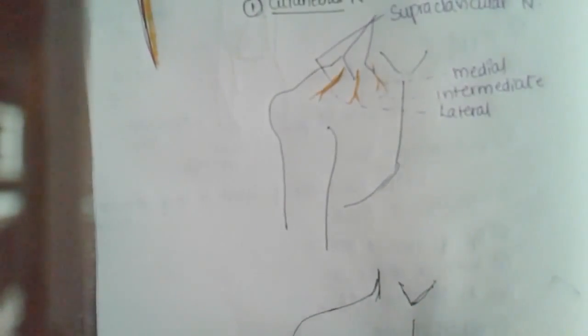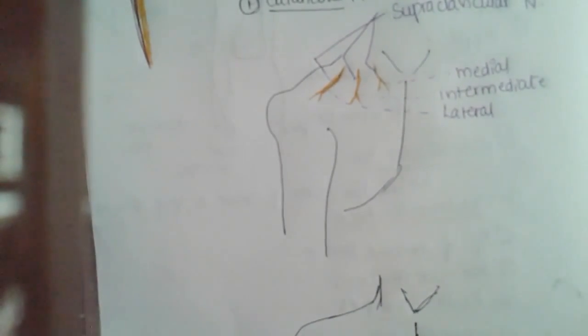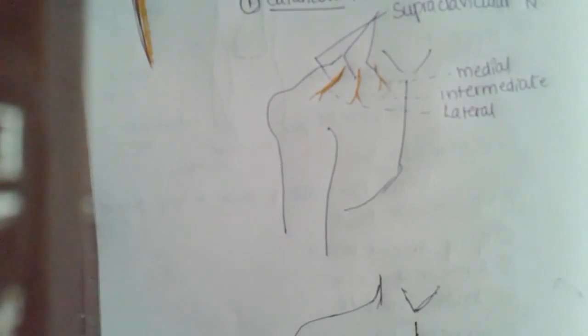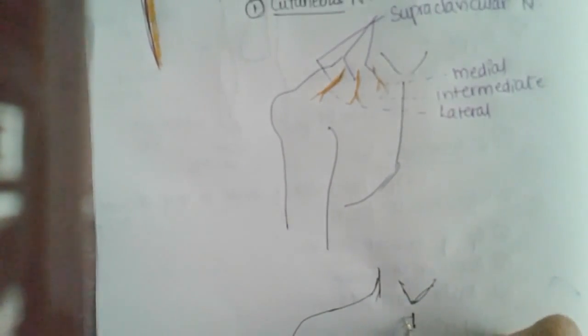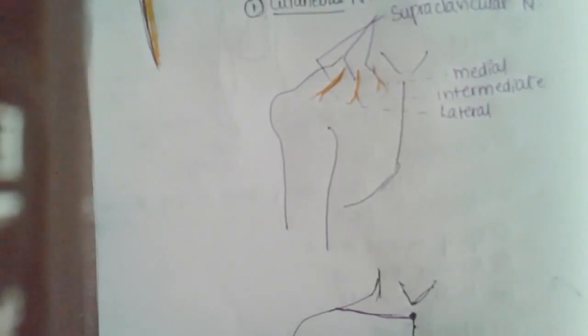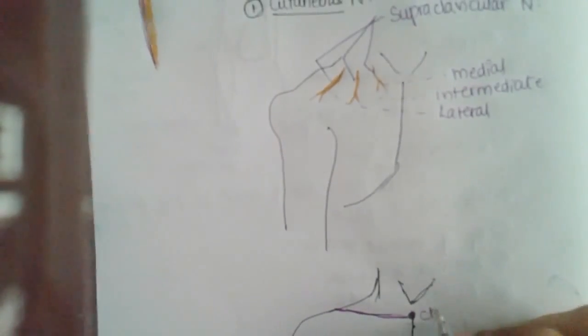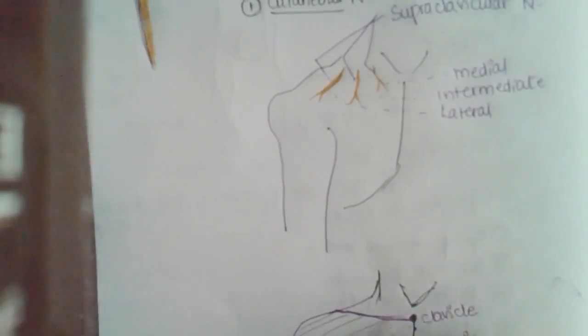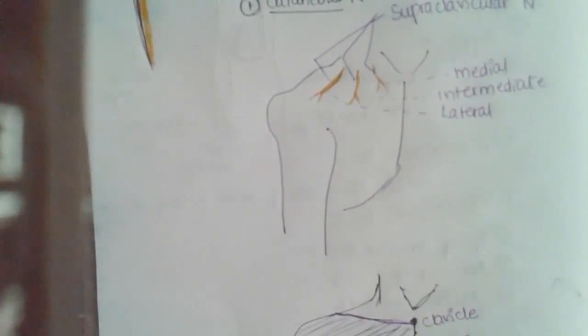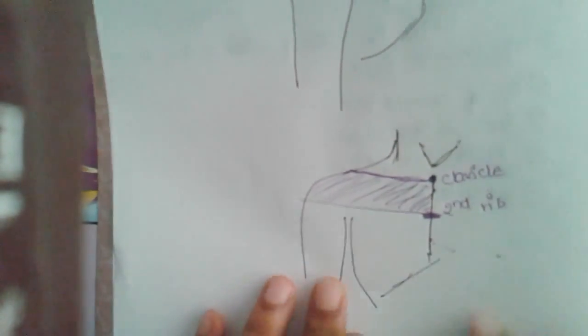Let me draw another diagram to visualize this. Here is the person with the sternum as the midline. The supraclavicular nerves supply the skin over the upper part of the deltoid, from the clavicle to the second rib — so the supply area runs from the clavicle down to approximately the second rib.